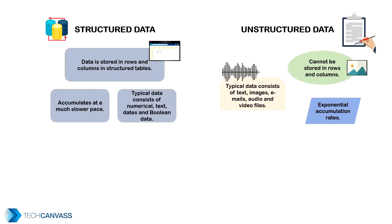The structured text is simple, like addresses and names. But the text in unstructured data is complex — for example, customer reviews that have to be analyzed to determine whether the sentiment is positive or negative. This is a complex analysis. Audio, video, handwritten documents, tweets, and so on come under unstructured data.